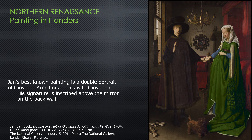Now here's a secular painting — one that is purely secular — and it is also loaded with symbols, done by the same artist who did the Ghent Altarpiece. Jan's best known painting is a double portrait of Giovanni Arnolfini and his wife Giovanna. His signature is inscribed above the mirror on the back wall, and it's a small painting — a little under a yard tall — showing a domestic interior, the inside of their home, with their bed back here and many telling details.